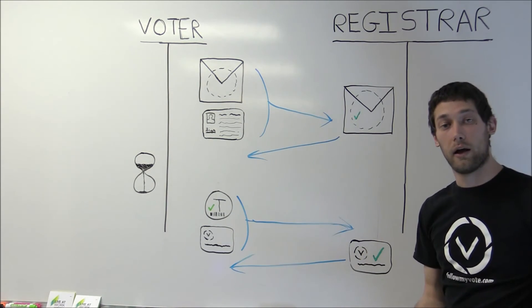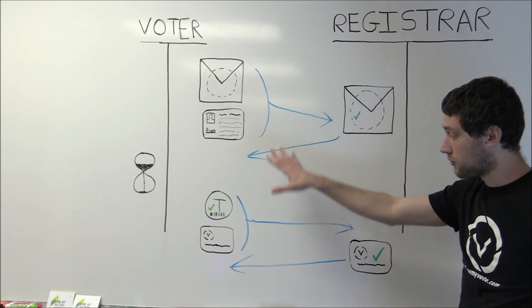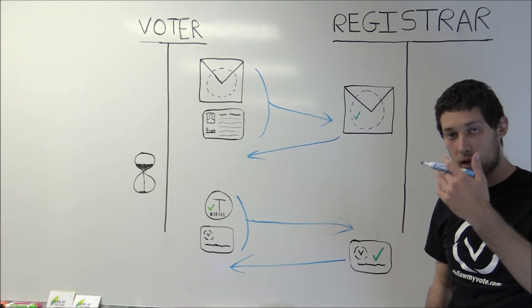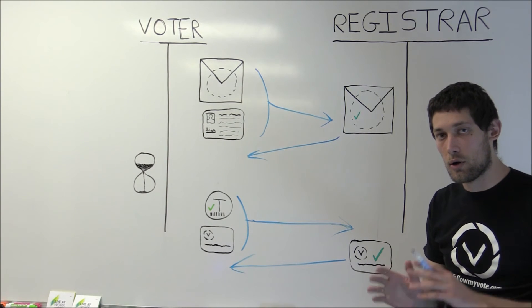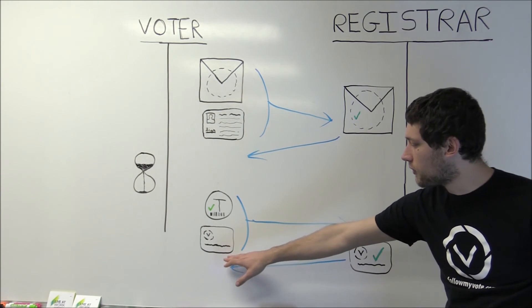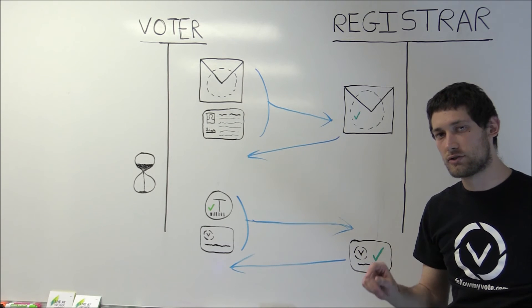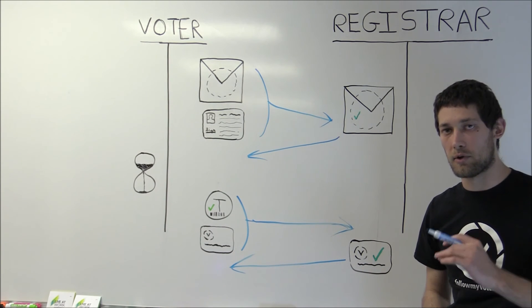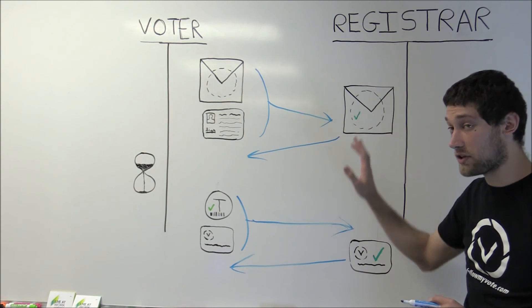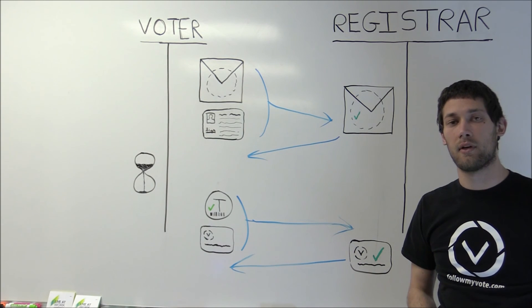And in this way, the voter can register with our software to get a voting account that is unique and authorized to vote, but he can cast votes with this voting ID so that no one can determine the voter's true identity from his votes, including the registrar itself. Thank you for listening.